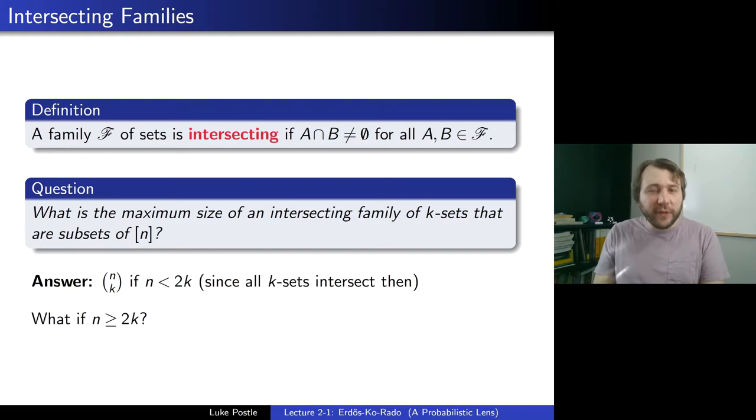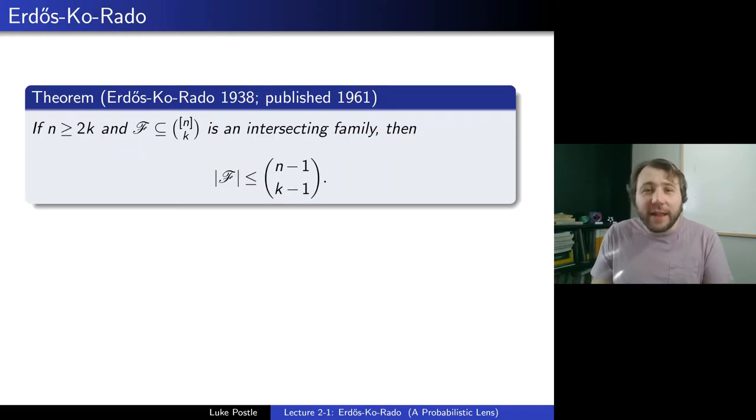So this is an old and classical theorem, and it's due to Erdos, Ko, and Rado, arguably from 1938, is when they first proved it. It was published in 1961. So what is the answer? If n is at least 2k and F is a subset of n choose k, so that's the notation of the set n choose k, the k sets of n, 1 up to n, is an intersecting family, then F is actually at most n minus 1 choose k minus 1. So it is a bit smaller than n choose k.